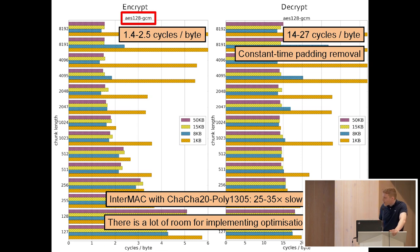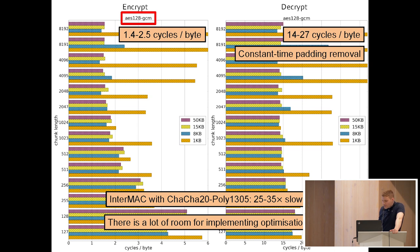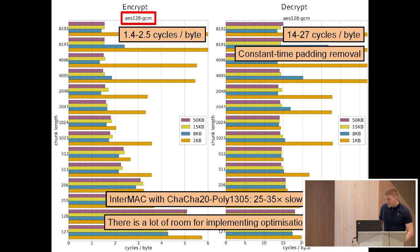We also looked at the performance of LibInterMAC and did some extensive benchmarking. We did it for four different message lengths, showing the encryption algorithm where we use AES-GCM as the internal nonce-based encryption scheme. The Y-axis denotes the chunk length and the X-axis denotes performance measured in cycles per byte. For each message length, the optimal performance achievable is between 1.4 and 2.5 cycles per byte, which is not bad.